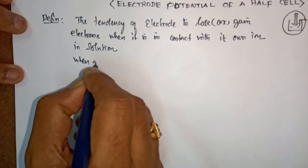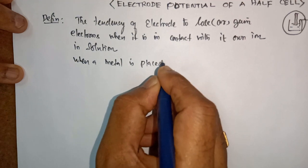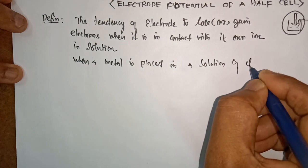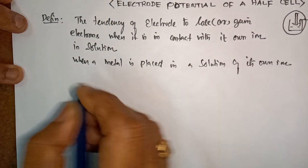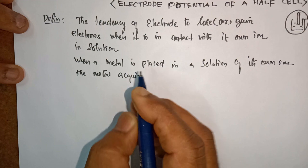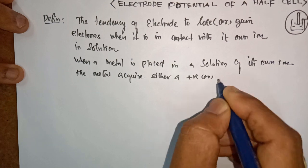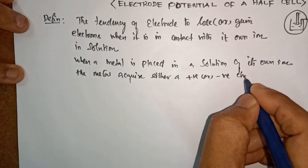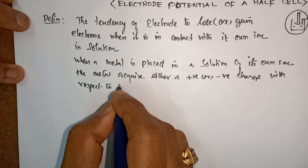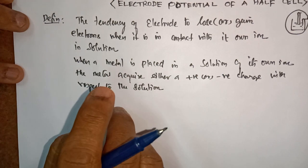One more definition: when a metal is placed or kept in a solution of its own ion, the metal acquires either a positive charge or a negative charge with respect to the solution in which it is dipped. This is one more definition for single electrode potential.